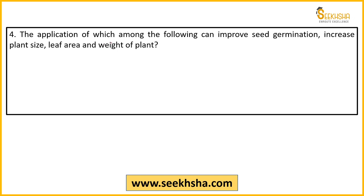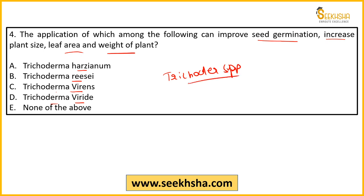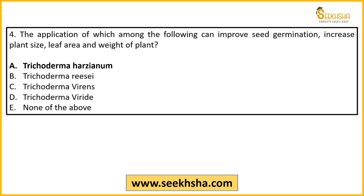Fourth question: 'The application of which among the following can improve seed germination, increase plant size, leaf area, and weight of plant?' This question goes further into specific Trichoderma species. The answer here will be Trichoderma harzianum, which is specifically used to improve seed germination, plant size, leaf area, and weight of the plant.